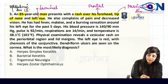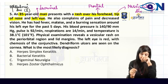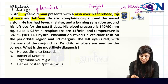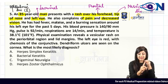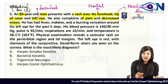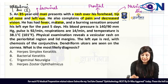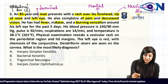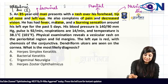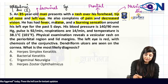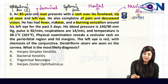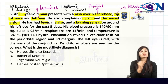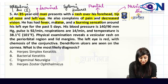Along with the rash, the patient is having pain and diminution of vision. He also has fever, malaise, and burning sensation — systemic features are present. So we have systemic features along with rashes involving the ophthalmic division of the trigeminal nerve.